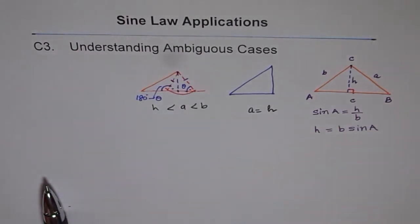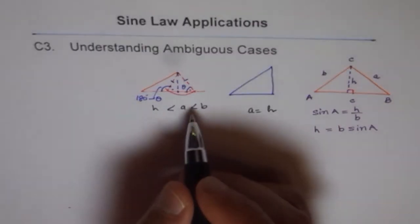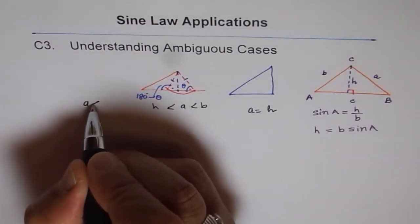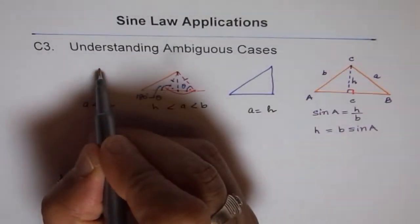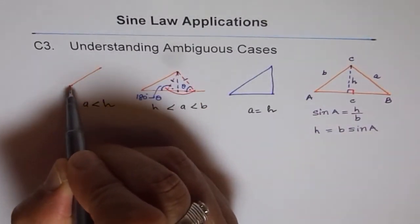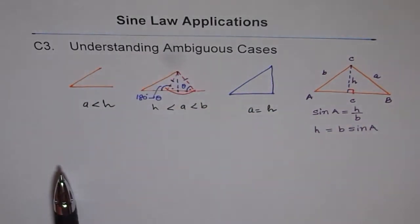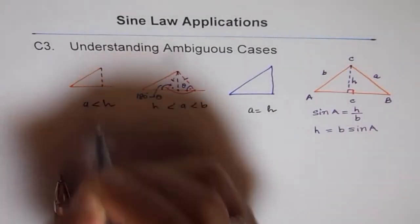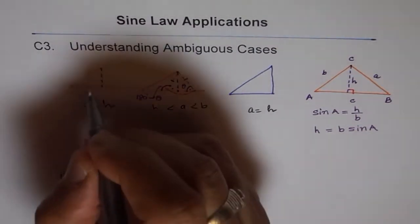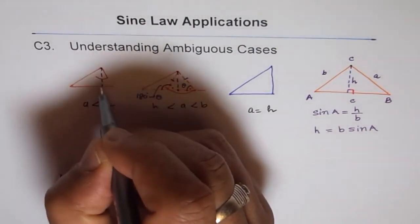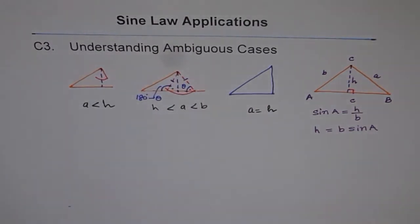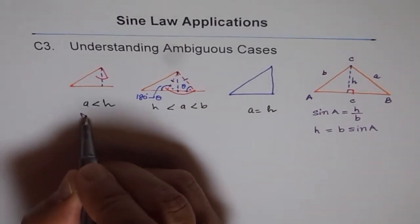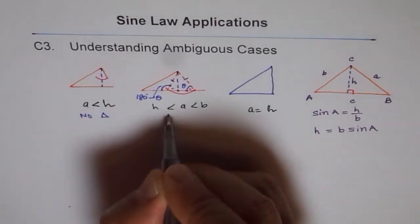Now let's take the scenario where a is less than H. In that case, the height is longer than side a, so the side cannot reach the base line — a triangle cannot be formed. So when a is less than H, we have no triangle.